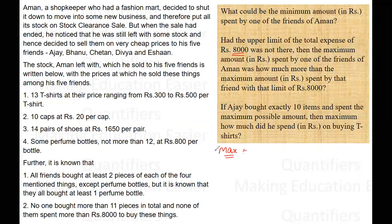Let's say the person we are talking about is Ajay. If we want to find the maximum amount spent by Ajay, that means he must buy 11 articles. Among these 11 articles, he should buy the maximum number of articles with the maximum cost, which is 1650 rupees — and that is for the shoes. Now let us check how many shoes at maximum he can buy.